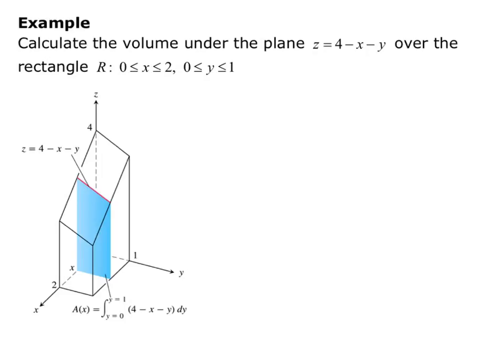Then we'll add all of those up to find the total volume of the region. So our volume is the double integral of the function 4 minus x minus y: dy goes on the inner integral with bounds 0 to 1, and dx goes on the outer integral with bounds 0 to 2.